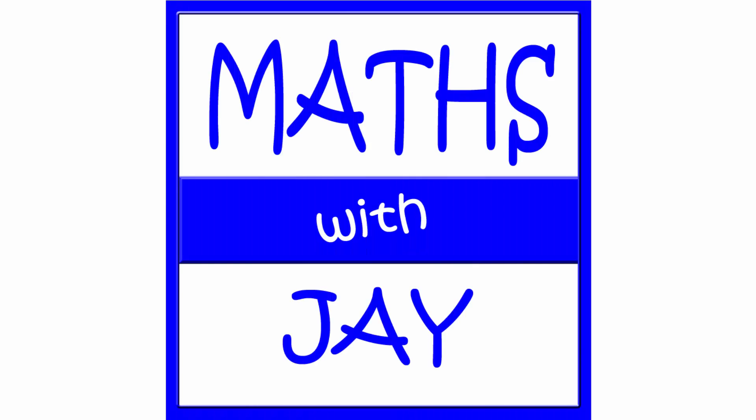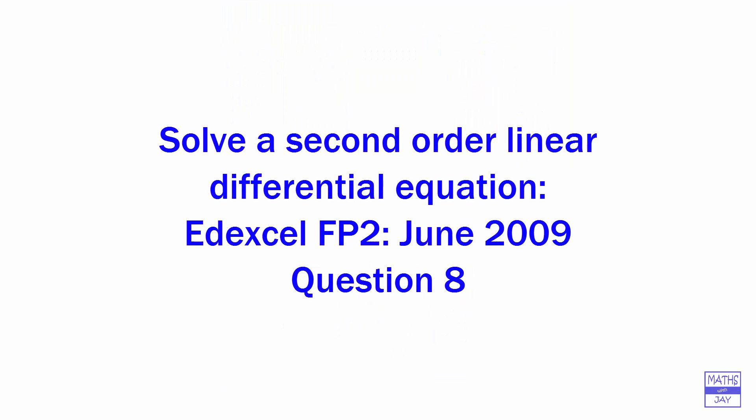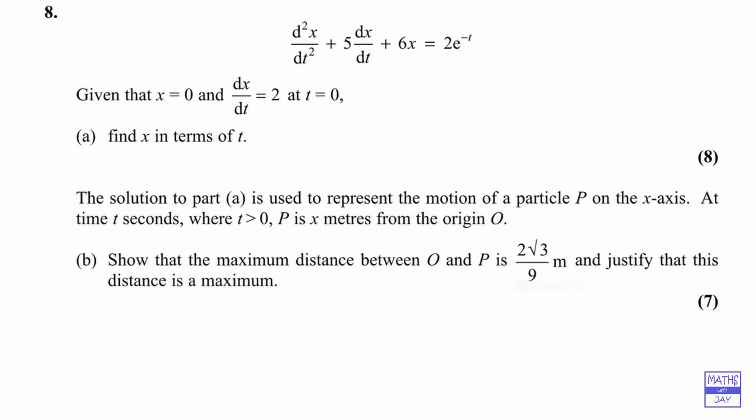Hello! Welcome to Maths with Jay. In this question we've been given a second order linear differential equation which has got constant coefficients. There are two parts to the question. In the first part we've been asked to solve for x, so we're going to find x in terms of t, and in the second part we're going to be finding the maximum value of x.